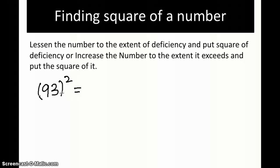Again, less the number by the deficiency: 93 minus 7 gives 86. Then put the square of the deficiency — deficiency is 7, so 7 squared is 49. The answer is 8649. Let's check with a calculator.